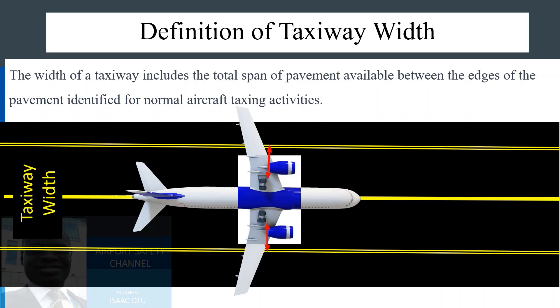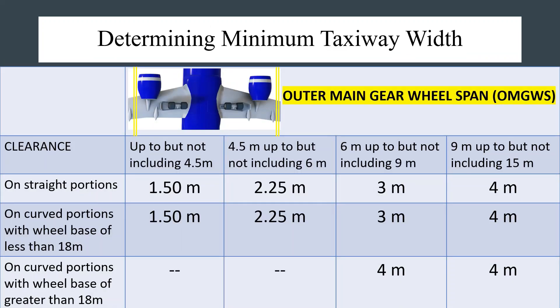How do we determine this span of pavement, which is also the width of the taxiway? The width is determined by projecting that when the cockpit of the aircraft remains aligned with the taxiway centerline markings, there will be sufficient clearance distances between the outer main wheel of the aircraft and the edge of the taxiway. These minimum clearance values are predetermined by ICAO in Annex 14. Therefore, the clearance distance and the outer main gear wheel span are the critical components factored into the design of taxiways.